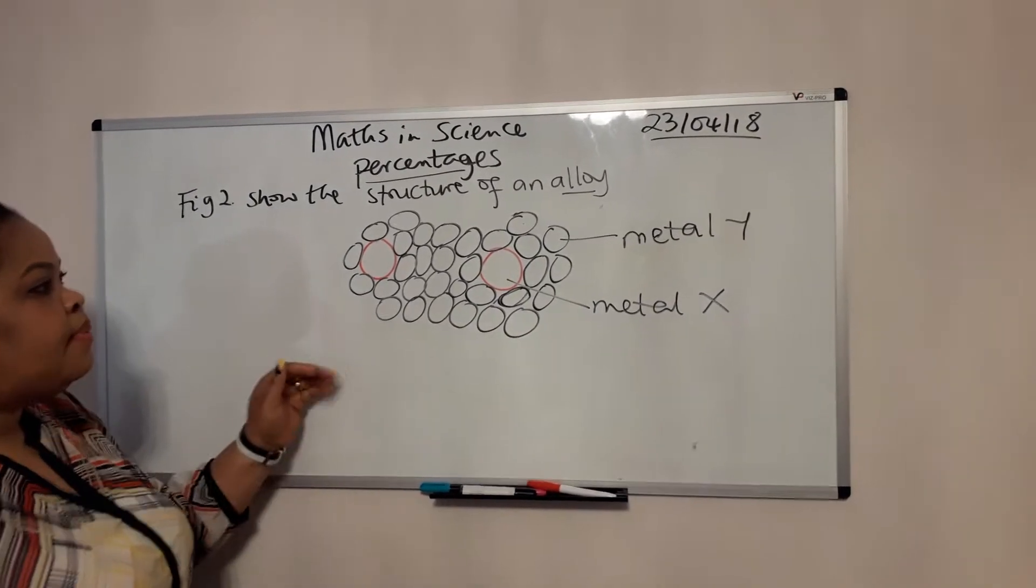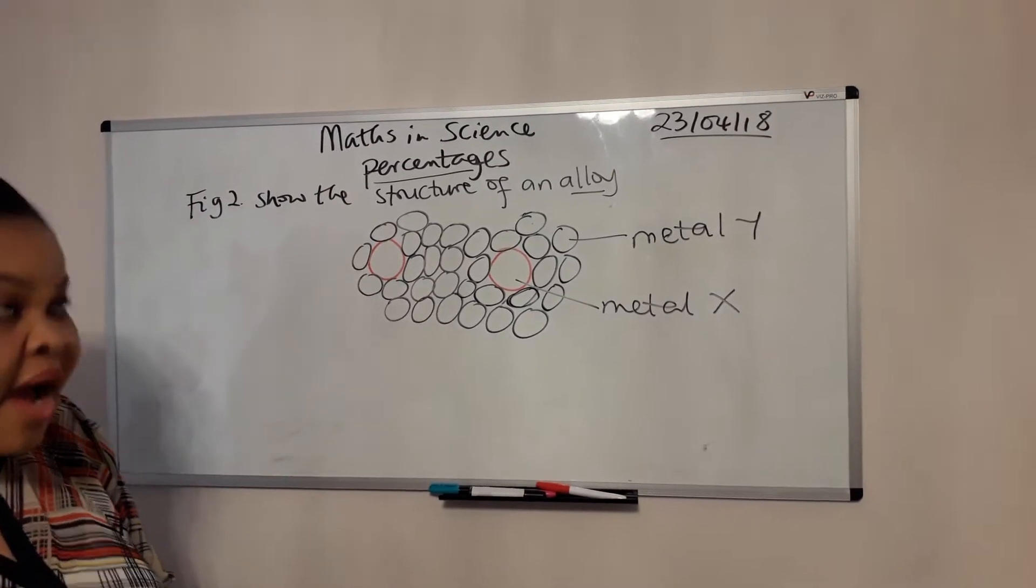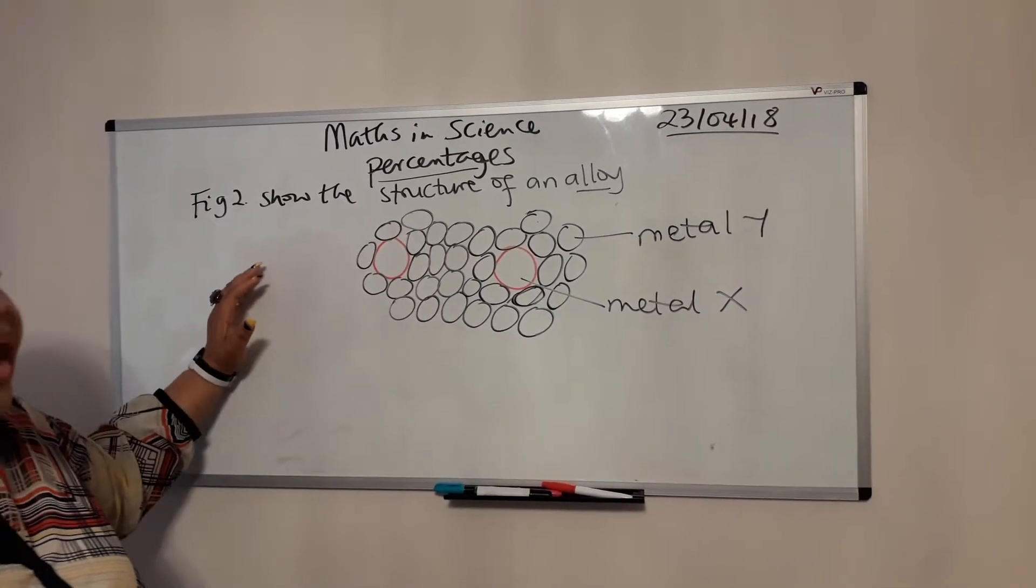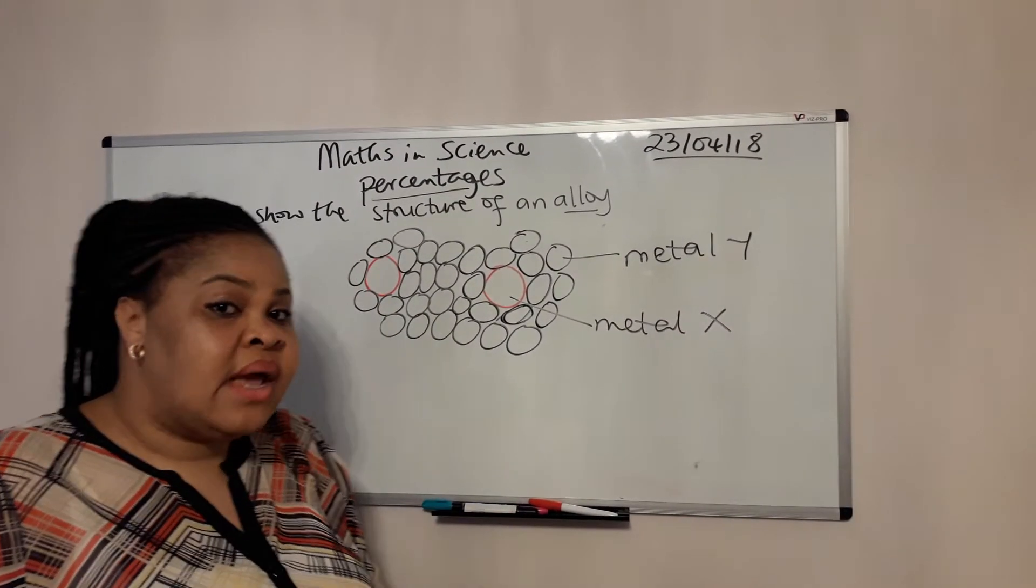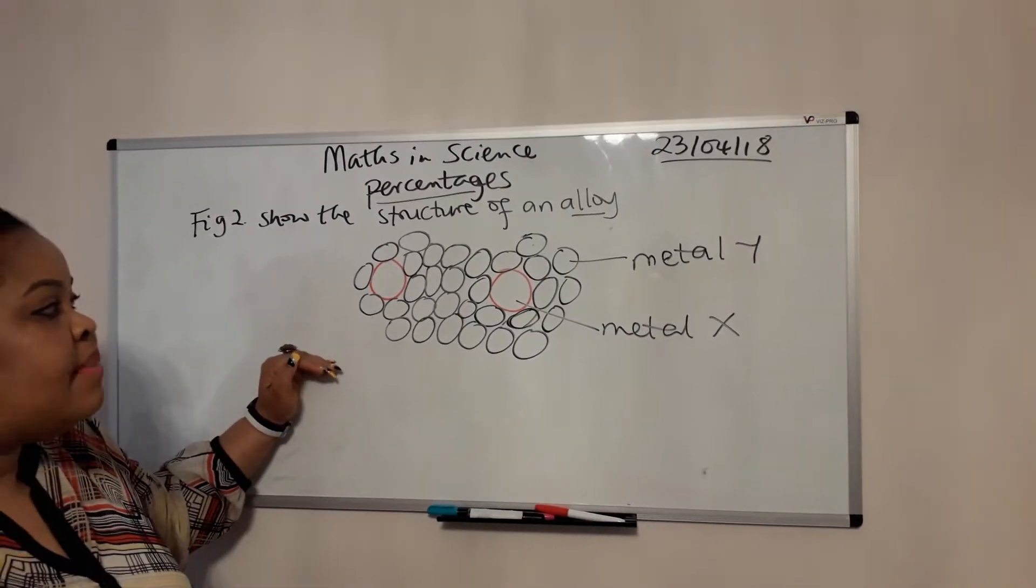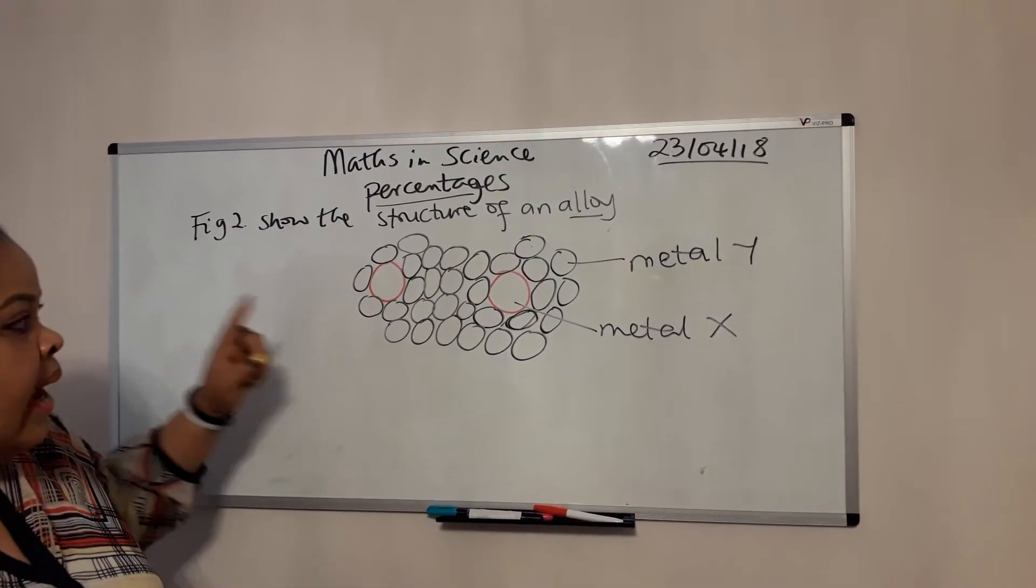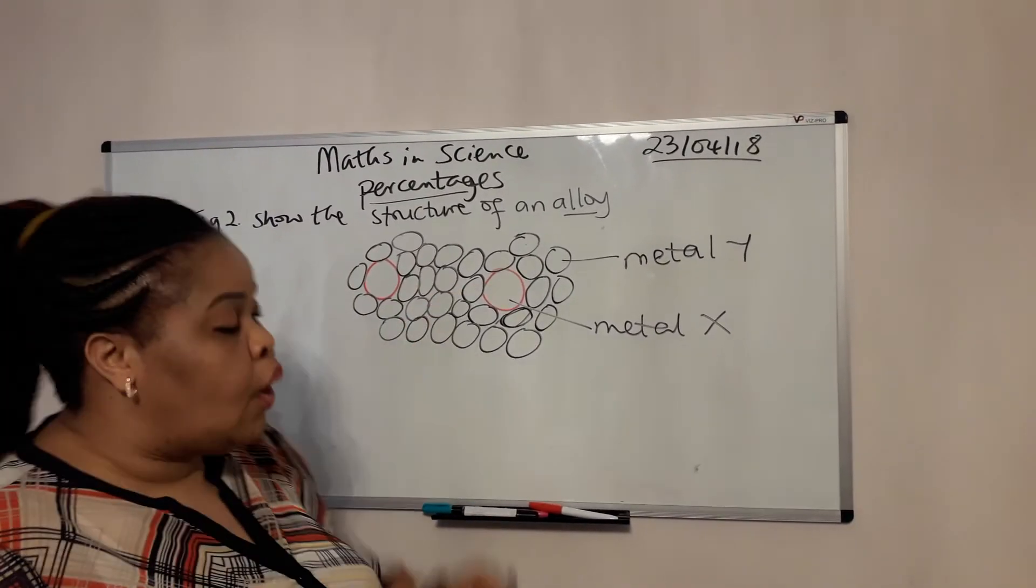So really quickly this morning, this is a typical calculation question in science. This is from the AQA Chemistry Paper 1, the assessment papers that have been released by the AQA exam board. This is a question in C1. Now if you look at this question, it says Figure 2 shows the structure of an alloy.